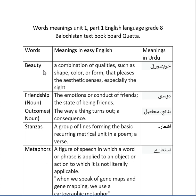Beauty: the meaning in English is a combination of qualities such as shape, color, or form that pleases the aesthetic senses, especially the sight. In Urdu it means khubsoorti. Friendship: the emotions or conduct of friends, the state of being friends. In Urdu it is known as dosti.